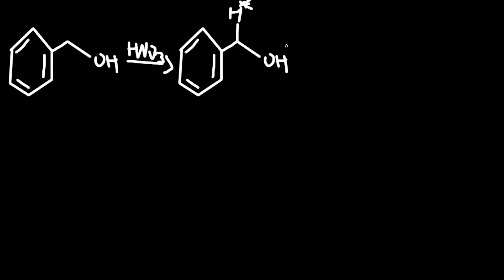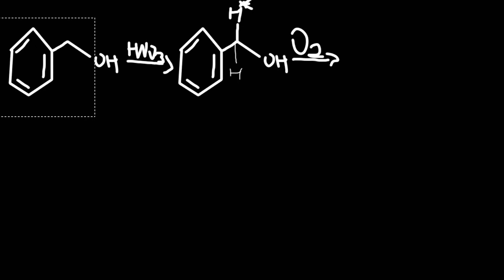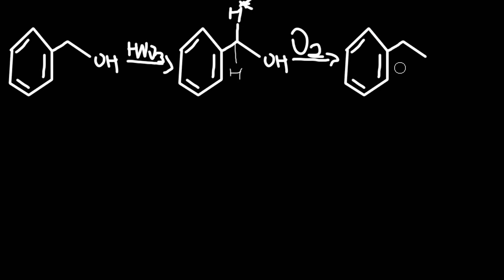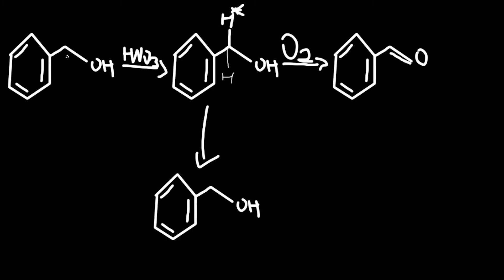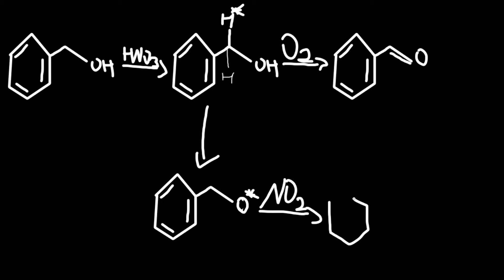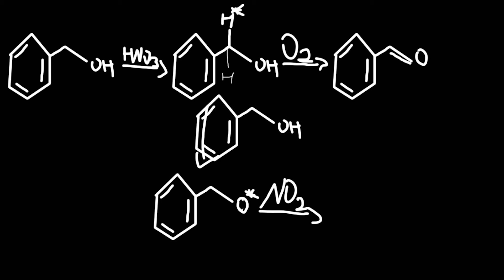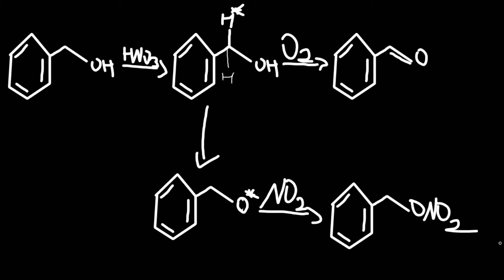So once we add the benzyl alcohol, a reaction starts happening. Theoretically, by this reaction scheme, the nitric acid reacts with the benzyl alcohol forming a radical by hydrogen abstraction. A radical compound is basically something which has an unpaired valence electron. This radical then decomposes in two ways: one is by reacting with oxygen to produce benzaldehyde, and the other turns into something else.